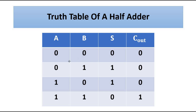The truth table of the half adder has two inputs with four input combinations: 00, 01, 10, 11. For the sum output, which is XOR, when both inputs are the same the output is 0, and when they are different the output is 1 — giving 0, 1, 1, 0. For the carry output, which is the AND operation, the output is 1 only when both inputs are 1.